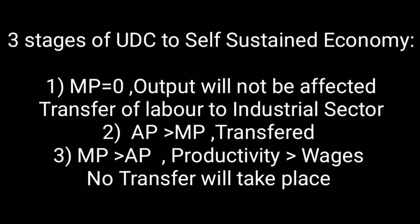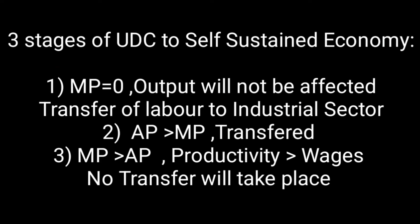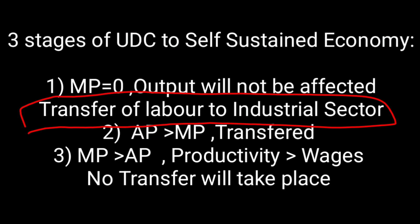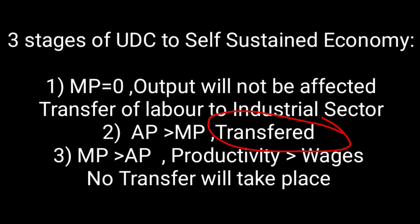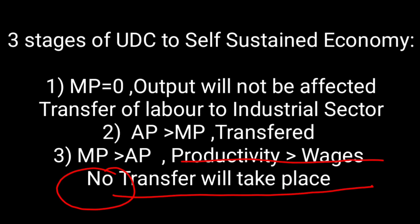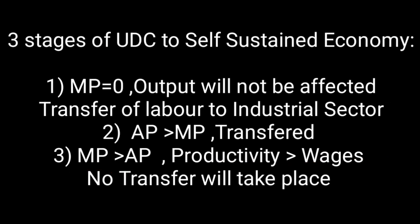An underdeveloped economy needs to follow three stages to become a self-sustained economy. In stage one, where marginal productivity is equal to zero, the output will not be affected and the transfer of labour will be to the industrial sector. In the second stage, where AP will be greater than MP, the labour is being transferred. And lastly, when MP will be greater than AP, which means productivity is greater than wages, no transfer will take place. This is how the underdeveloped economy will transform itself into a self-sustained economy as per the model.